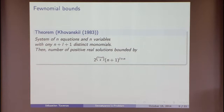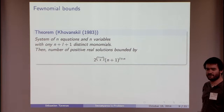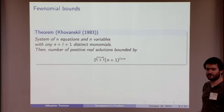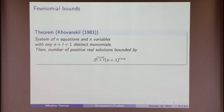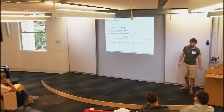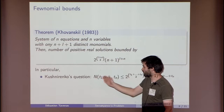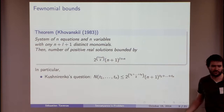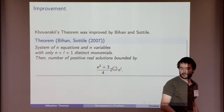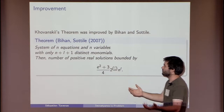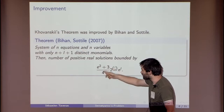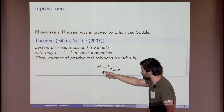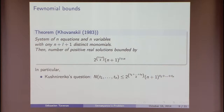Khovanskii was inspired by Sebastianoff's theorem. So it answers the question by Kushnirenko — there exists a bound. There is an improvement such that if you have the same system of n equations in n variables and the number of distinct monomials is small, you can get a bound that is exponential in l-squared, whereas before it was exponential in (l+n) squared — an improvement in the exponent.